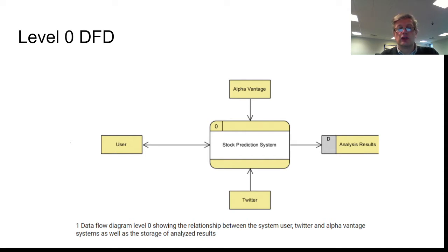The analysis results is storage, which is like a hard disk. The bit in the middle is showing how the whole thing works together in the system. We can see information is going backwards and forwards from the user to the stock prediction system, from the stock prediction system back to the user. The Alpha Vantage system is flowing data into the stock prediction system. The information from Twitter is feeding into the stock prediction system. And all the information from the stock prediction system is being stored onto a hard disk, which is labeled here D, and they're the results of the analysis that's been done.